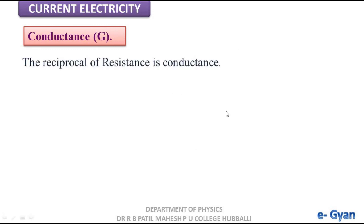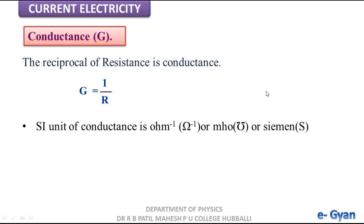Next, conductance. It is the reciprocal of resistance and shows exactly opposite properties to resistance. It is given by G equal to 1 divided by R. The SI unit of conductance is per ohm, also called mho or siemen.